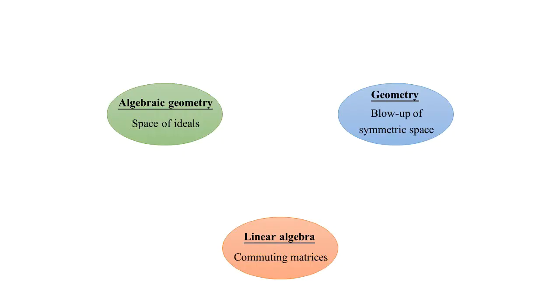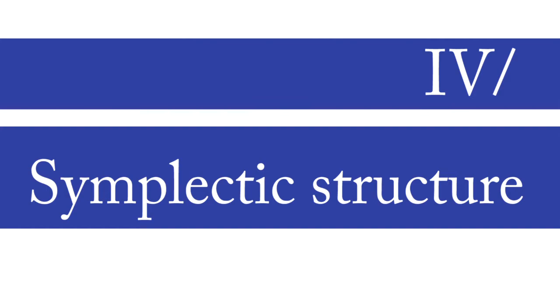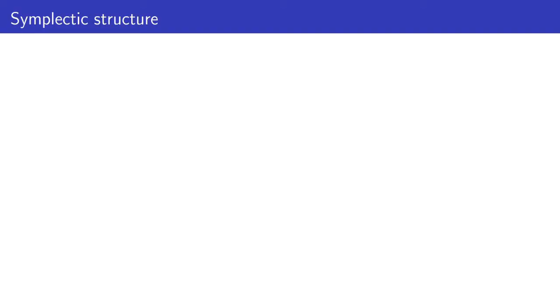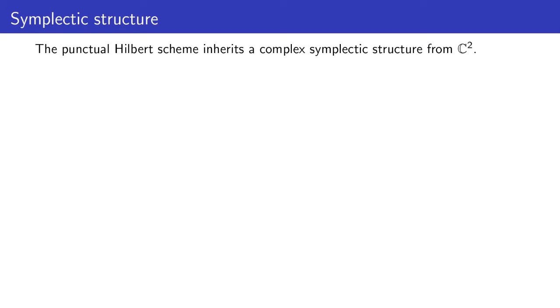So now we have completed the cycle of ideas. We have three viewpoints and we can go from any viewpoint to any other. Let's see one more aspect of the punctual Hilbert scheme: its symplectic structure. The punctual Hilbert scheme inherits a complex symplectic structure coming from C². On the space of n distinct points of the plane, (C²)^n, you have a symplectic form given by ω equals the sum of dxᵢ wedge dyᵢ, where x and y are complex coordinates.